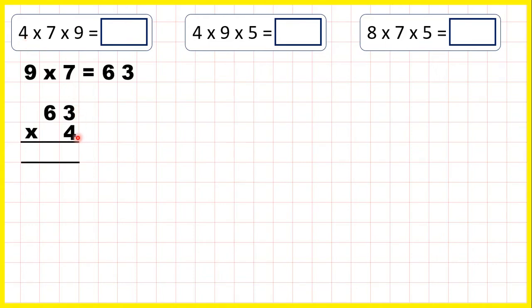3 times 4 is 12, so 1, 2. And now 6 times 4 is 24, plus 1 is 25. So our answer is 252.